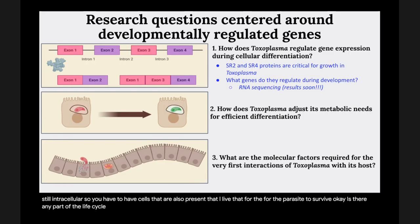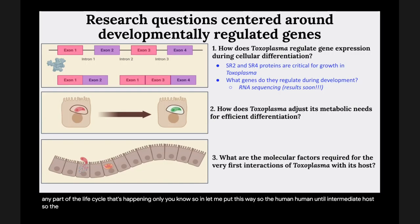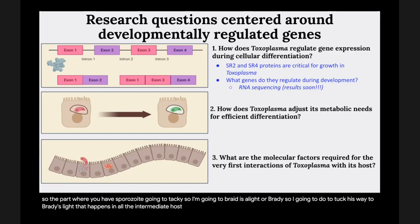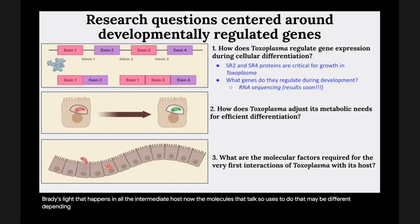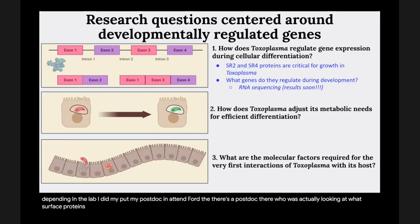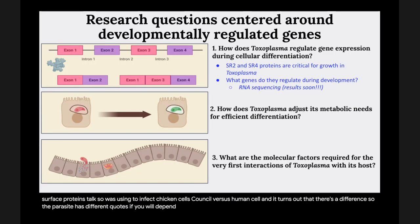Q: Is there any part of the life cycle happening only in humans? No. The human is an intermediate host. The part where sporozoite goes to tachyzoite to bradyzoite, or bradyzoite to tachyzoite, happens in all intermediate hosts. However, the molecules that Toxo uses may be different depending on the host. There's a postdoc who was looking at what surface proteins Toxo was using to infect chicken cells, cow cells, versus human cells, and it turns out there's a difference. The parasite has different 'coats' depending on what type of organism it is infecting.